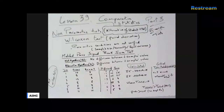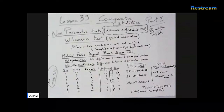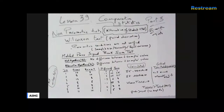Today we use the Wilcoxon Matched Pairs Signed Rank Sum test, or simply the Wilcoxon test. 'Matched pairs' means we have paired observations. 'Signed' means we retain the signs and not just the values. 'Rank' means we rank the differences between the two samples. 'Sum' means we sum the ranks for positive and negative differences to obtain our Wilcoxon T statistic.